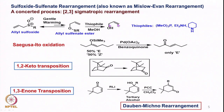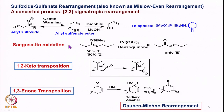Then we saw the sulfoxide-sulfenate rearrangement, also known as the Mislow-Evans rearrangement — a concerted process involving a 2,3-sigmatropic rearrangement where the allyl sulfoxide goes to allyl sulfenate, followed by cleavage of the oxygen-sulfur bond by a thiophile to form the allylic alcohol. Then we covered the Cygursa E2 reaction, which is basically an oxidation of an enol silyl ether to the corresponding enone using palladium acetate and benzoquinone as co-oxidant.